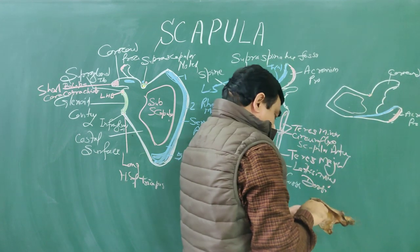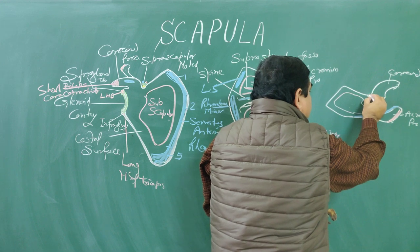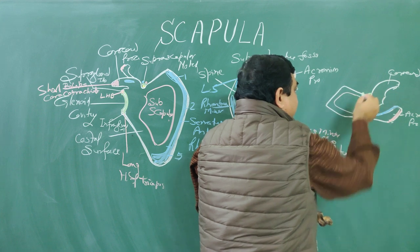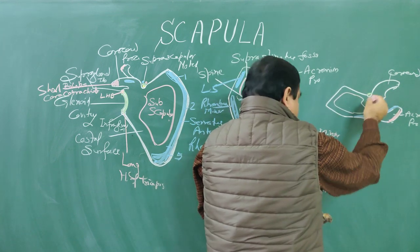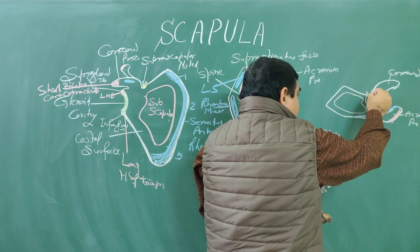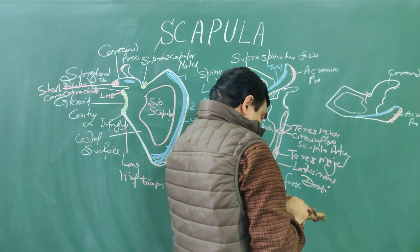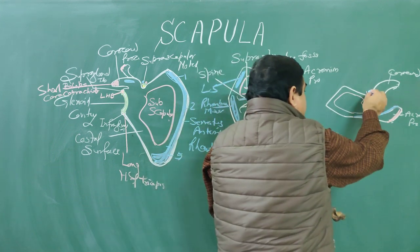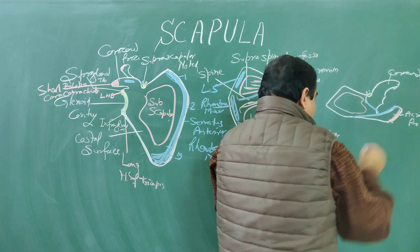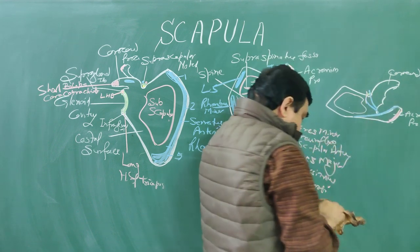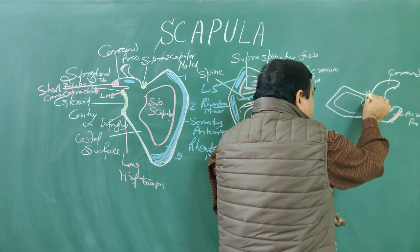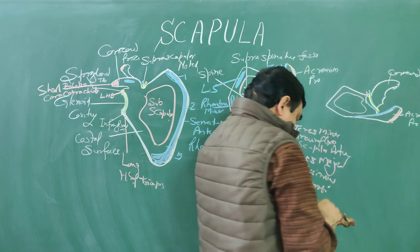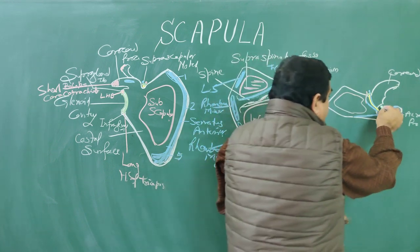This is the suprascapular notch, and this notch is bridged by the suprascapular ligament. The suprascapular artery passes superior — superficial to this ligament. The artery passes above this ligament, while the nerve passes deep to this ligament through the foramen.